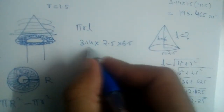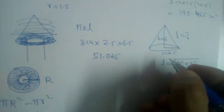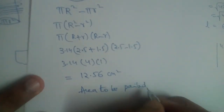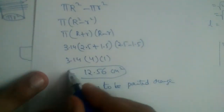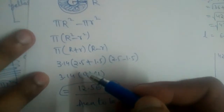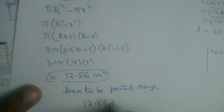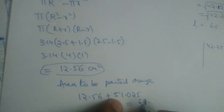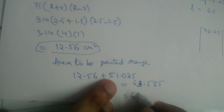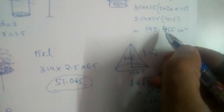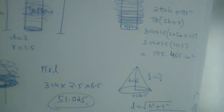Substituting l = 6.5: πRl = 3.14 × 2.5 × 6.5 = 51.025 centimeters squared. The total area to be painted orange = curved surface area of cone + annular ring = 51.025 + 12.56 = 63.585 centimeters squared. The yellow area is 195.465 centimeters squared.